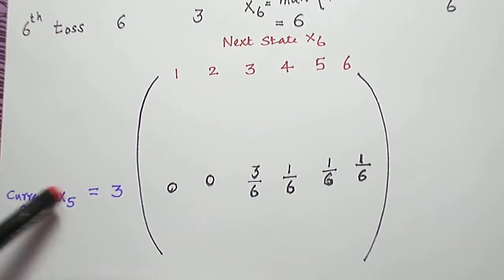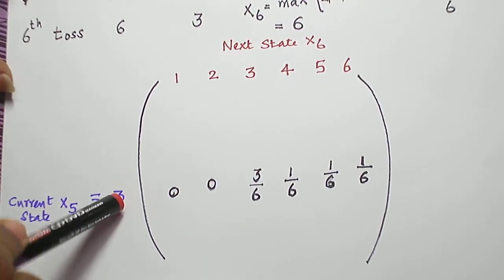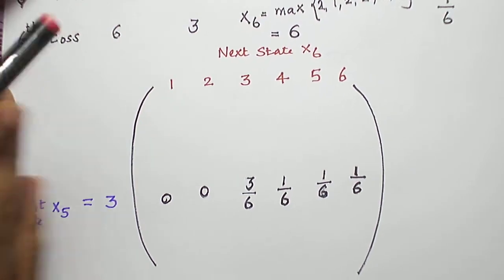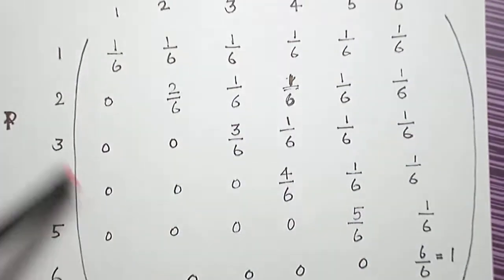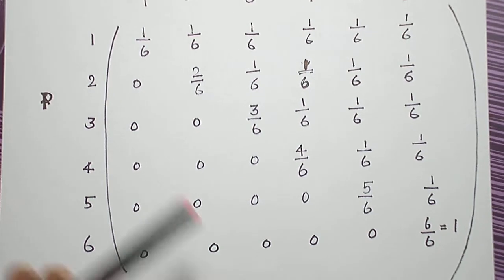So it is one particular case, X5 if it is 3. Like that, X5 if it is 1 or 2. Like that, if we consider, we can get the entire 6 by 6 matrix in this way.